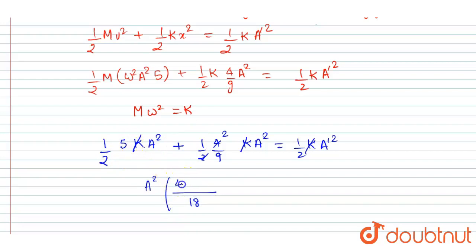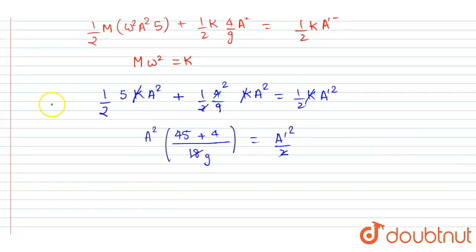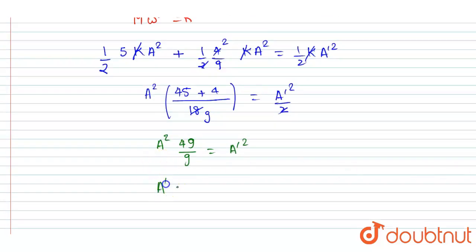9 into 5 is 45, plus 2 into 2 equals 4, so this equals A'²/2. After simplification and cancelling by 9, we get: A²·(49/9) equals A'². Taking the square root of both sides gives A' = 7A/3 as the answer.